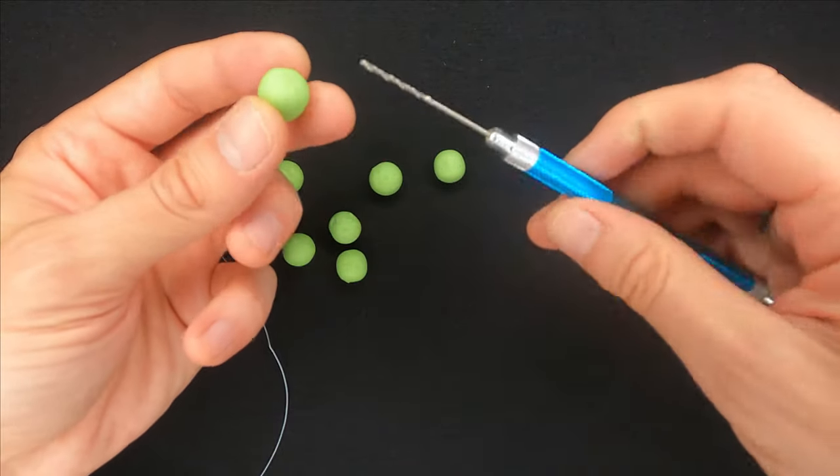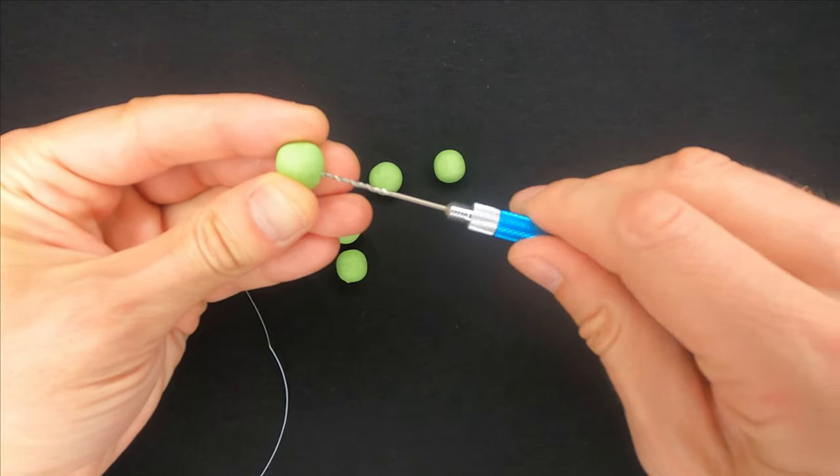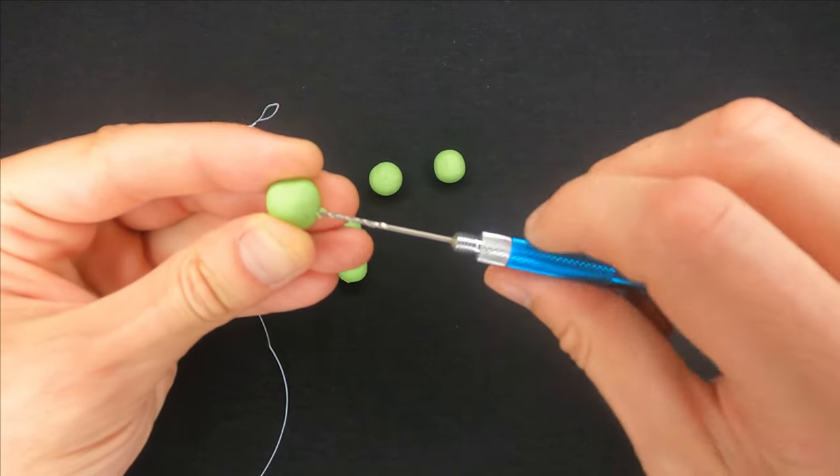To use this tool, you simply take the boilie and make a hole in it with the help of the drill needle.